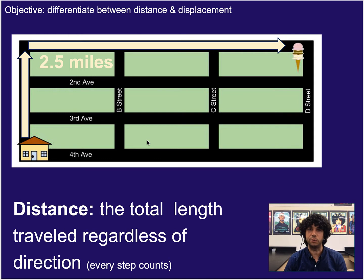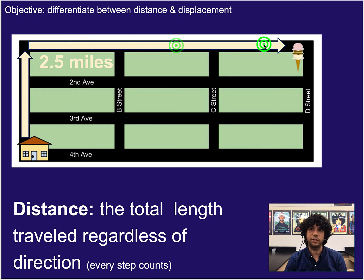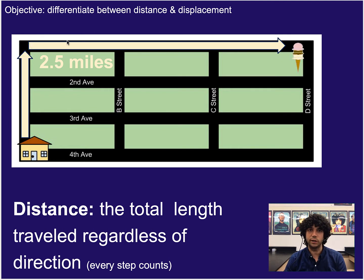We have different names for both of those things. That 2.5 mile path where every step along the way counts — we call this distance. Distance is the total length traveled regardless of direction. I like to think of it as every step counts, so if you do a little detour, all of that counts.